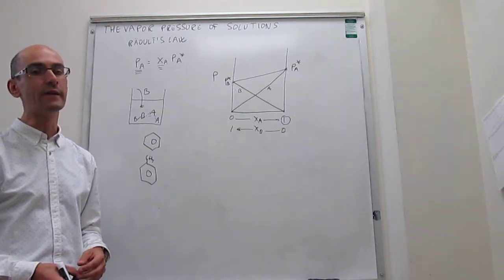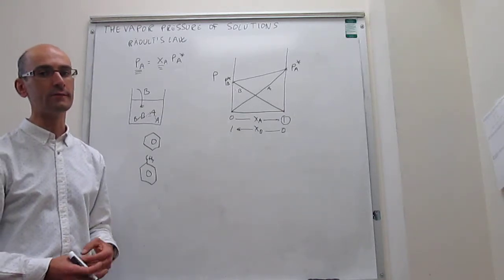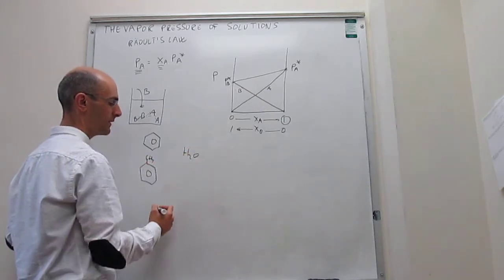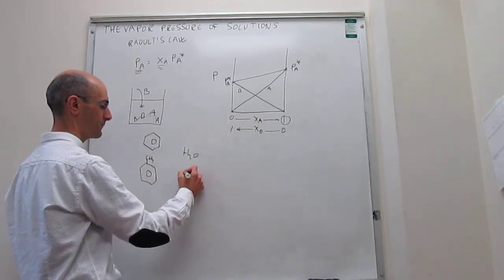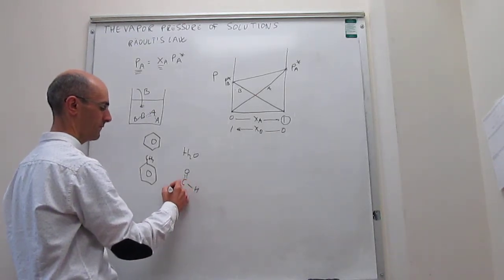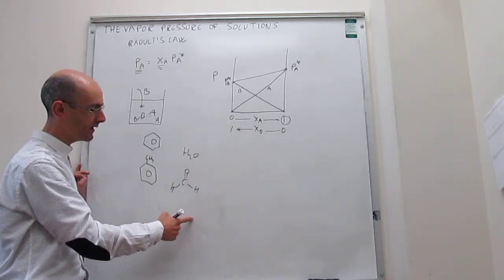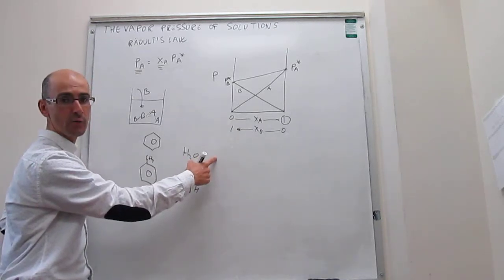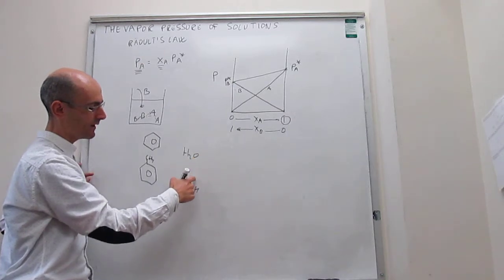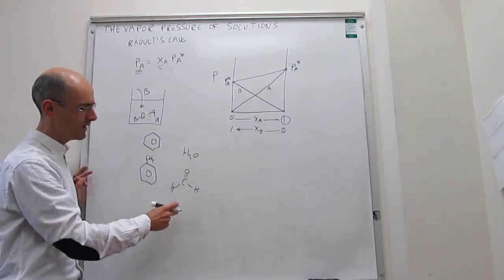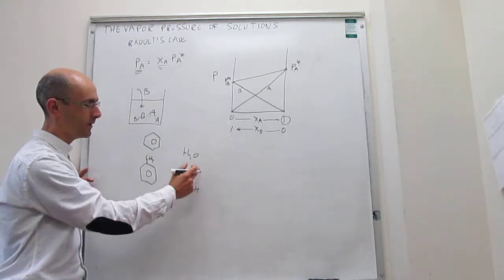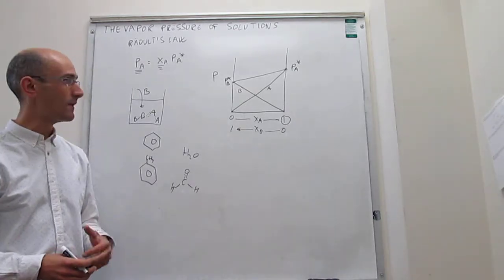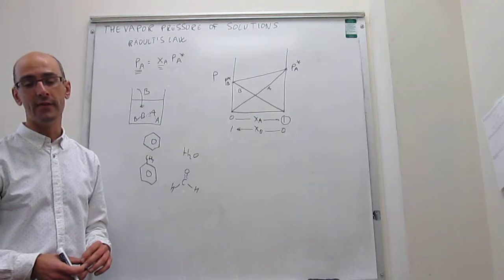Ideal mixtures are very, very rare, and it's quite common to find deviations from Raoult's Law. For example, think about a mixture of water and formaldehyde. Formaldehyde interacts with formaldehyde only through dipole-dipole and a little bit of dispersion interactions, while water interacts with water through hydrogen bonds. The interactions of water with formaldehyde are quite different from formaldehyde with formaldehyde or water with water, so in that case you have a non-ideal solution, and deviations from Raoult's Law appear quite quickly.